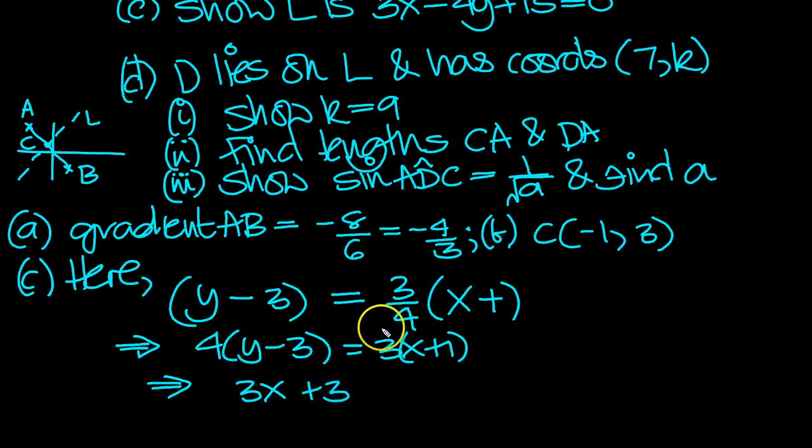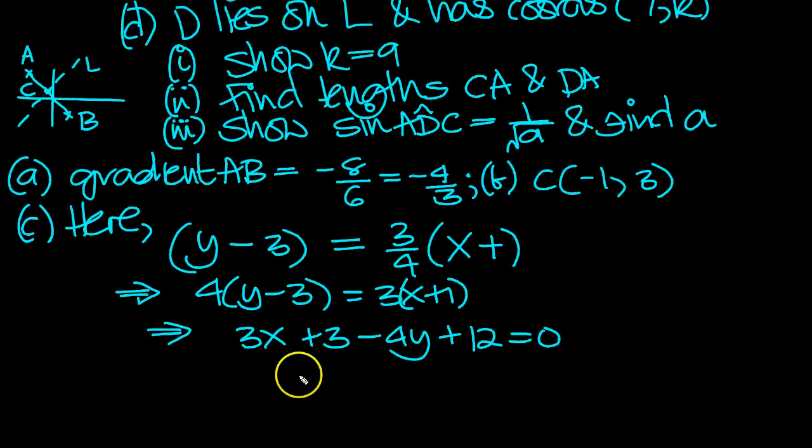Then this will be 4y, so move that over to -4y, and then we've got -12, move that over to +12. So I've done a couple of steps in one. So we end up with 3x - 4y + 15 = 0, and there's our equation of our line, which is what we wanted to show.